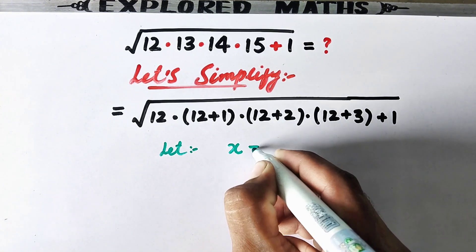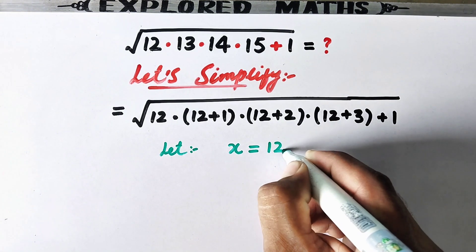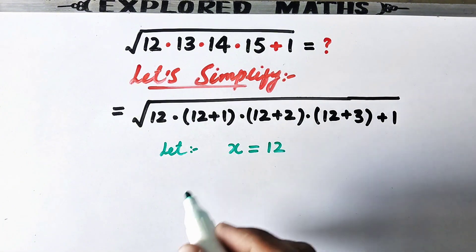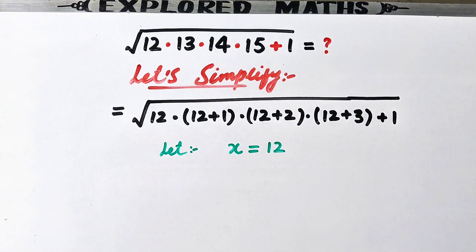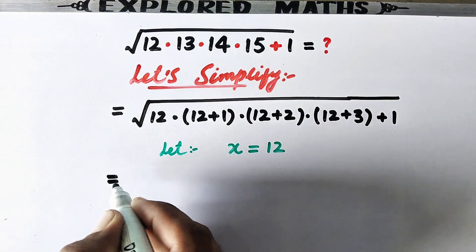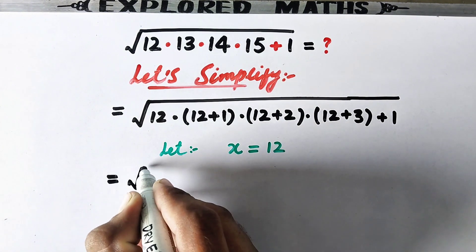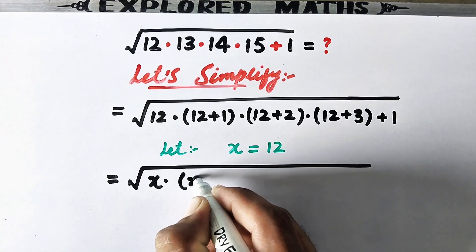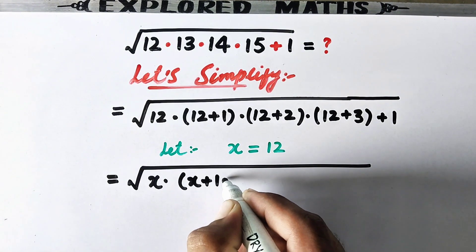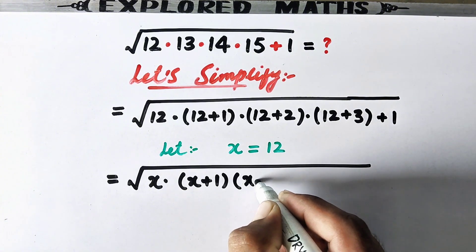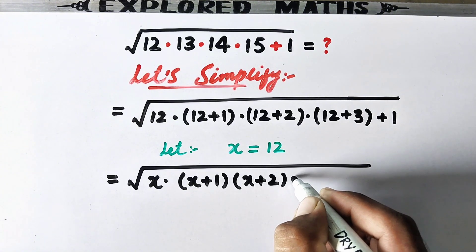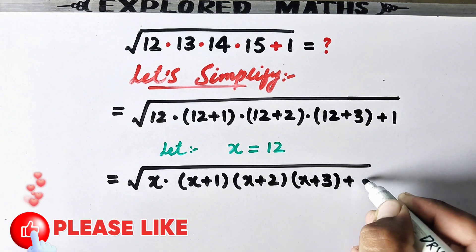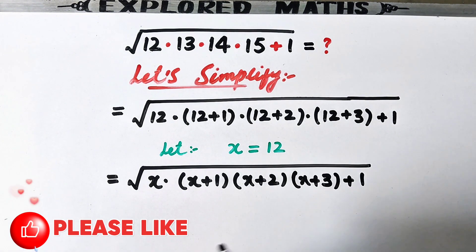Now we will let x equal to 12, so that by substituting the value of x the expression will be equal to the square root of x times x plus 1, times x plus 2, times x plus 3, plus 1.